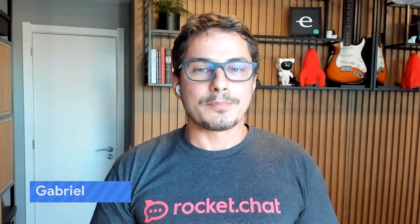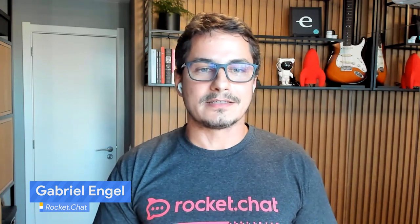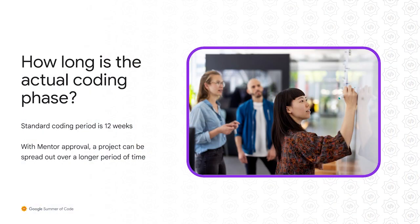The earlier a potential participant makes contact with the open source project and interacts with the community to show their interest in the project, the better their chances of being selected to be a GSOC contributor. The standard coding phase is 12 weeks. However, to allow more flexibility for GSOC contributors, the project can be spread out over a longer time with mentor approval.